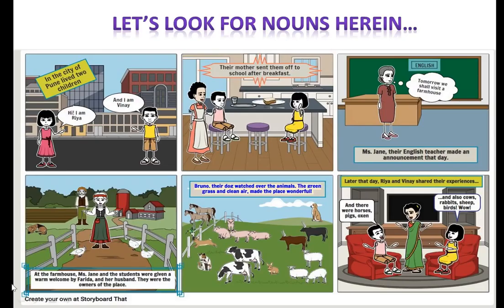Here is a storyboard that has all the different types of nouns that we are going to do today. Let's go scene by scene. In the city of Pune lived two children. I am Rhea, and I am Vinay. In the second scene, their mother sent them off to school after breakfast. In the third scene, there is a teacher teaching English — Miss Jane, their English teacher — and she made an announcement that day.